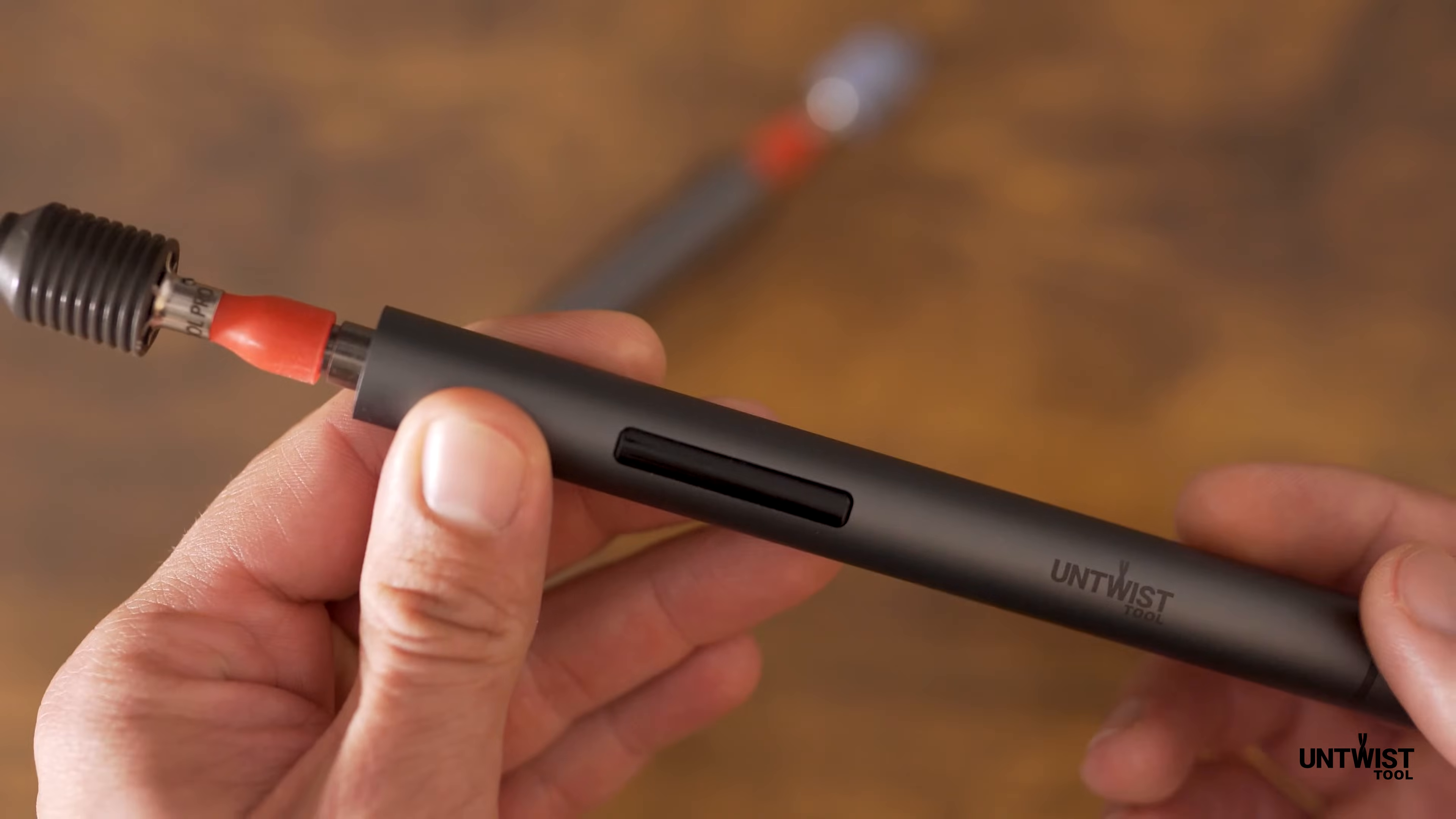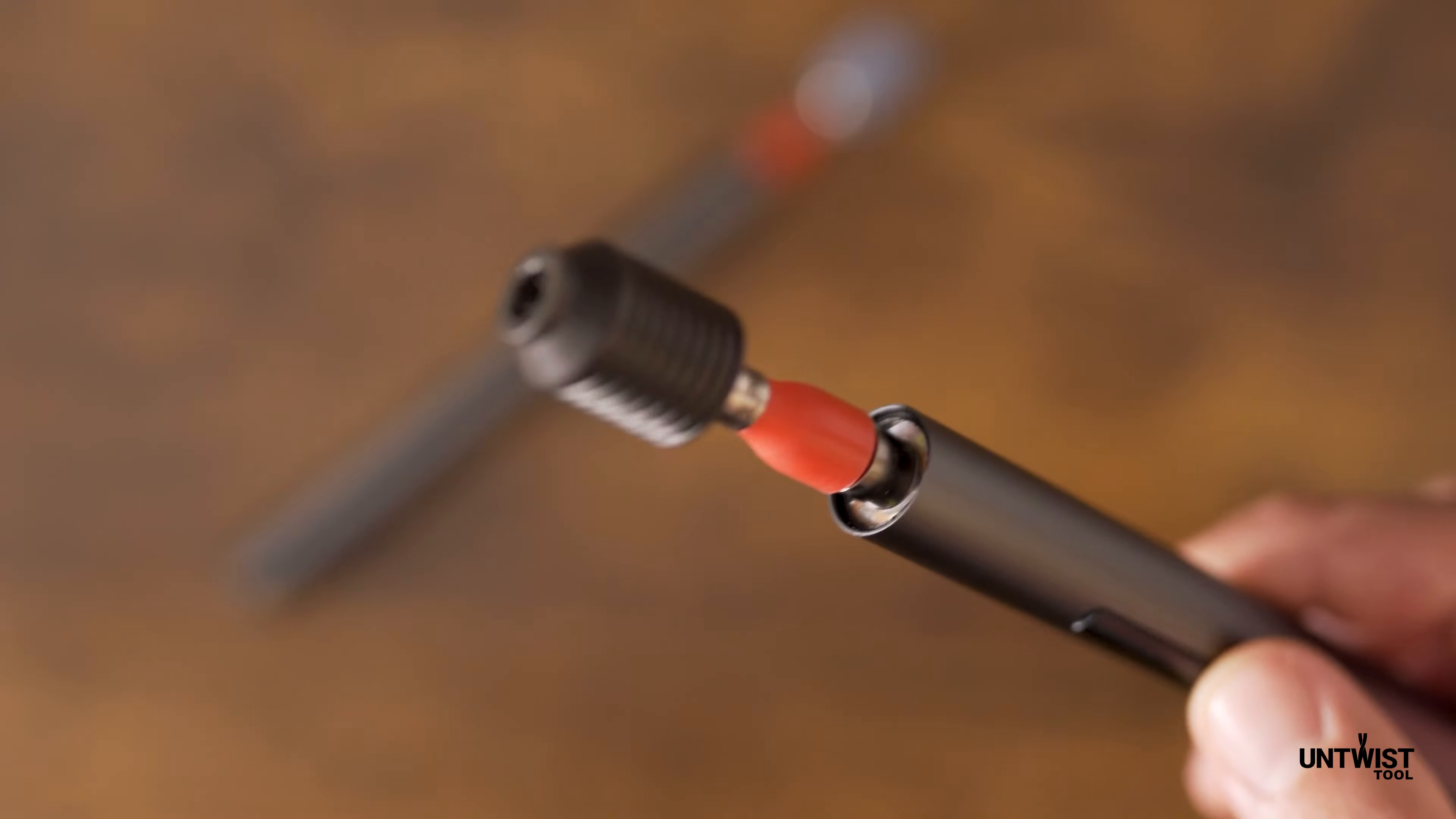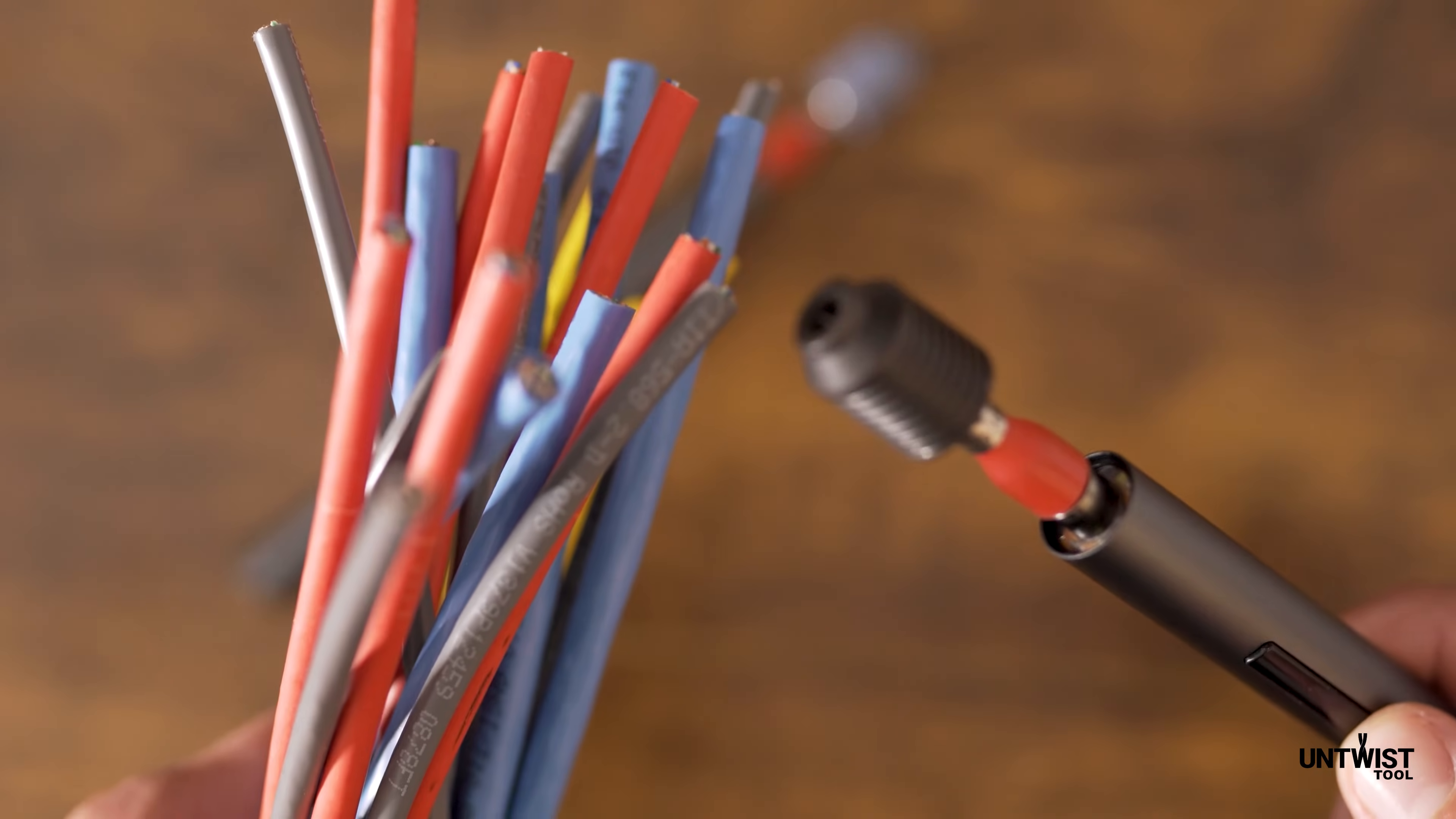By pressing the bottom part of the button, the tool head will start spinning counterclockwise. For most cables out there, this is the correct head movement for untwisting the pairs.